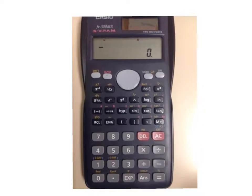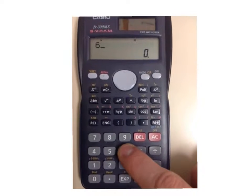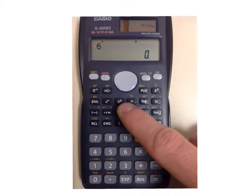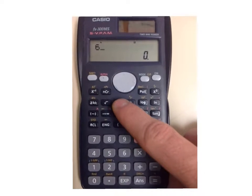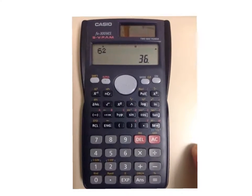I just want to show you how to do exponents on your calculator. So if you want to do 6 squared, you can do 6, and then right there is the exponent of 2 button. So you can type that in and you get your answer of 36.